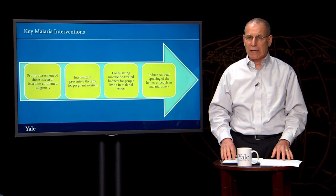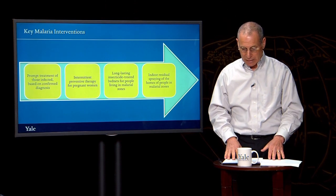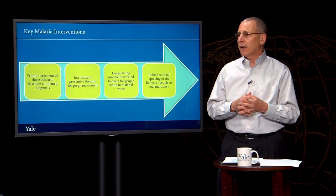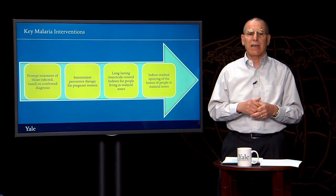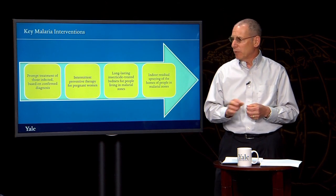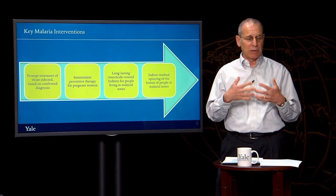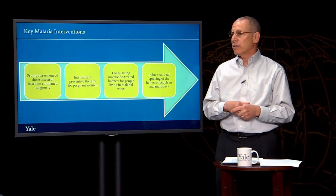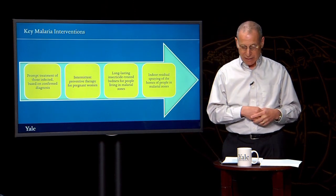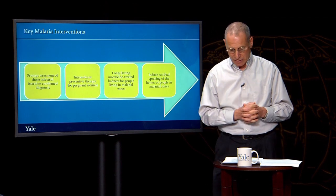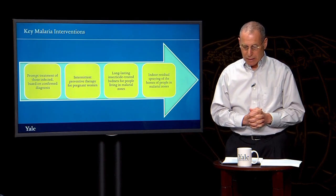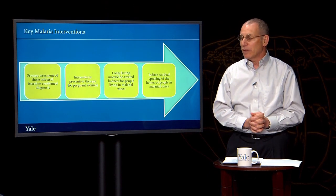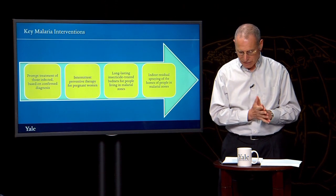Intermittent treatment for pregnant women has also been growing. Traditionally, malaria was diagnosed on the basis of a blood smear — blood was taken from someone suspected of having malaria, placed on a slide, and people looked for the malaria parasite. Increasingly, however, people in endemic areas are using a rapid diagnostic kit that works very well. It is specific and sensitive to diagnose malaria in ways that are easier than looking for the parasite on a slide.